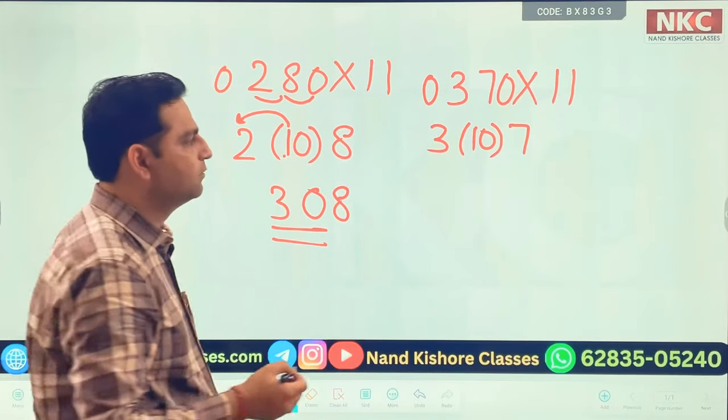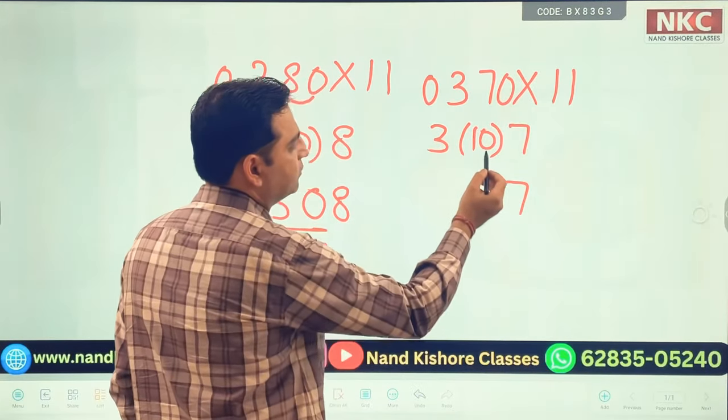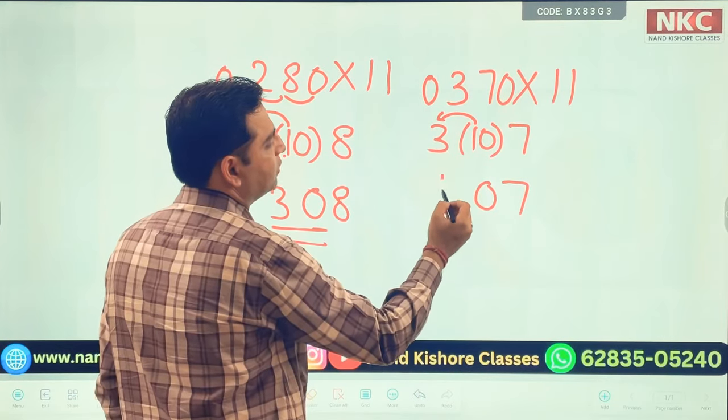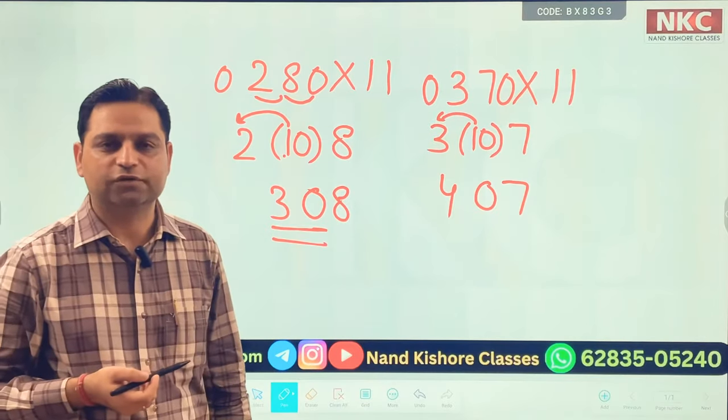3 plus 0 is 3. Again the same situation. So what we need to do? Write 7. From 10 I will write 0, and this 1 goes to the next place. 3 plus 1 is 4. My answer is going to be 407.